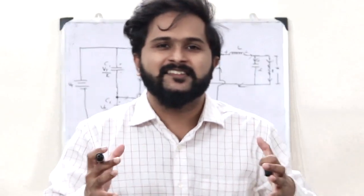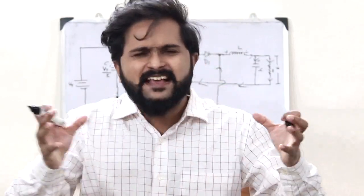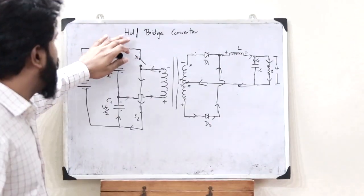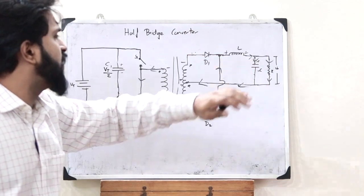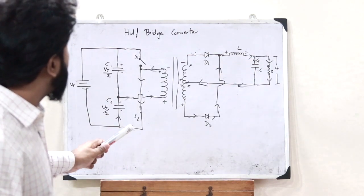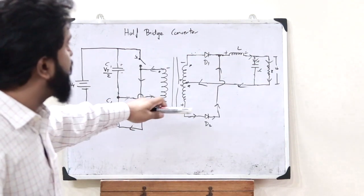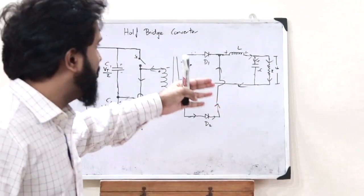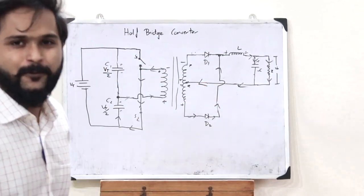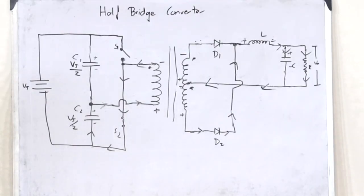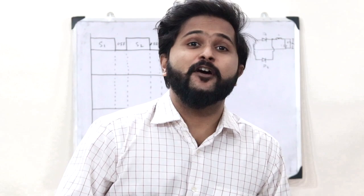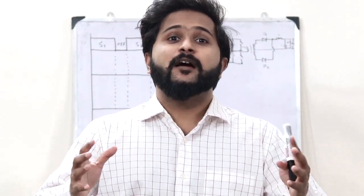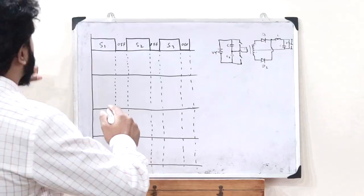This is the basic working operation of a half bridge converter. In all cases, we obtain a particular output voltage V0. Next, let us see the waveforms associated with a half bridge converter.